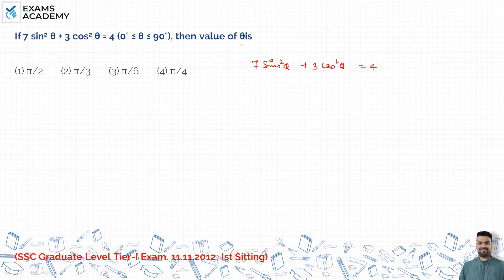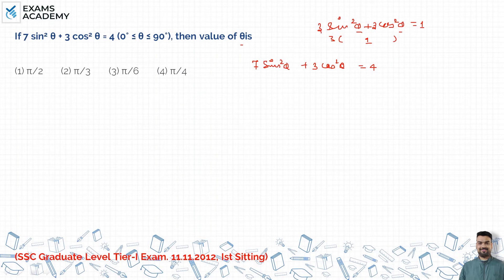आप देखे, आपको एक बात मालूम होगी कि sin²θ + cos²θ = 1 होता है जब theta same हो। और यहाँ जो coefficient है, यहाँ पर भी 3 है, यहाँ पर भी 3 होना चाहिएगा — यह common ले लो 3, तो यह 1 हो जाएगा।